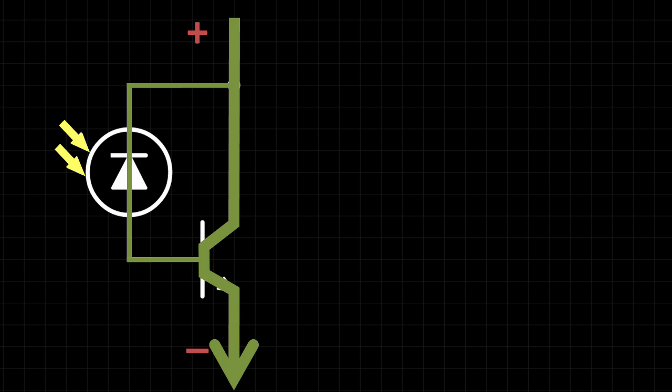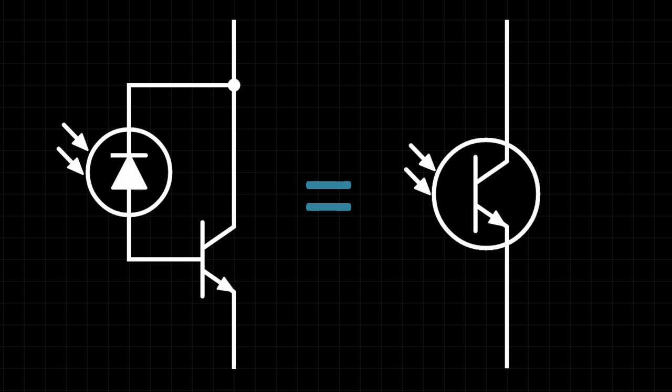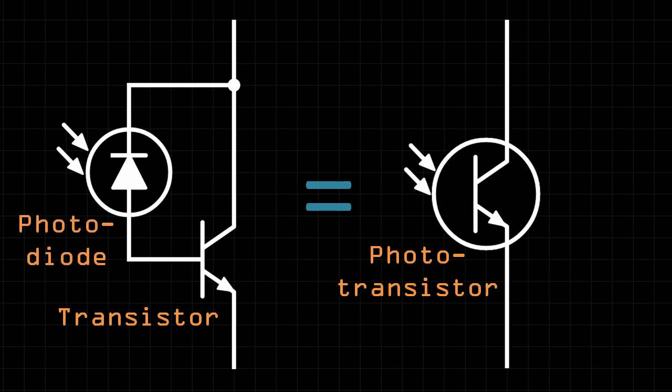Now this circuit that we've built is equivalent to a single component. On the left we've used a photodiode and a transistor, which we can replace with a single phototransistor.